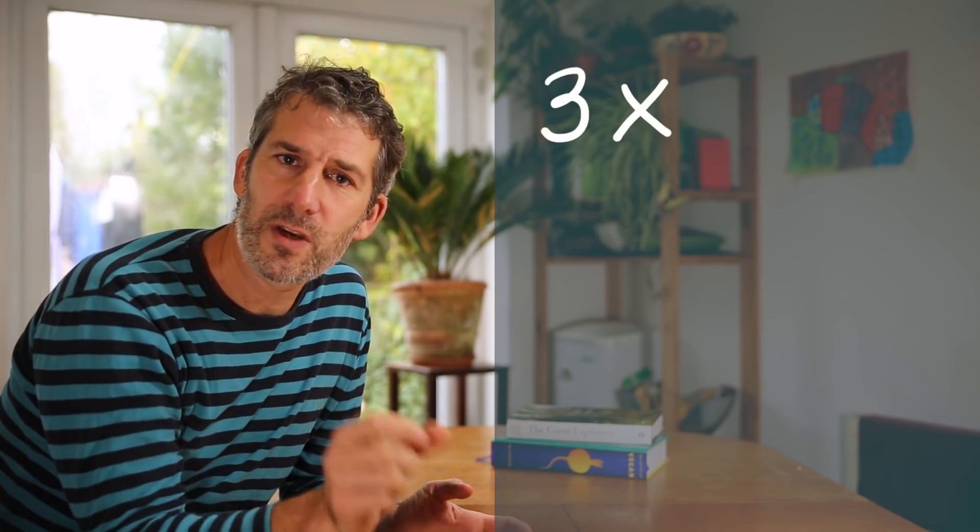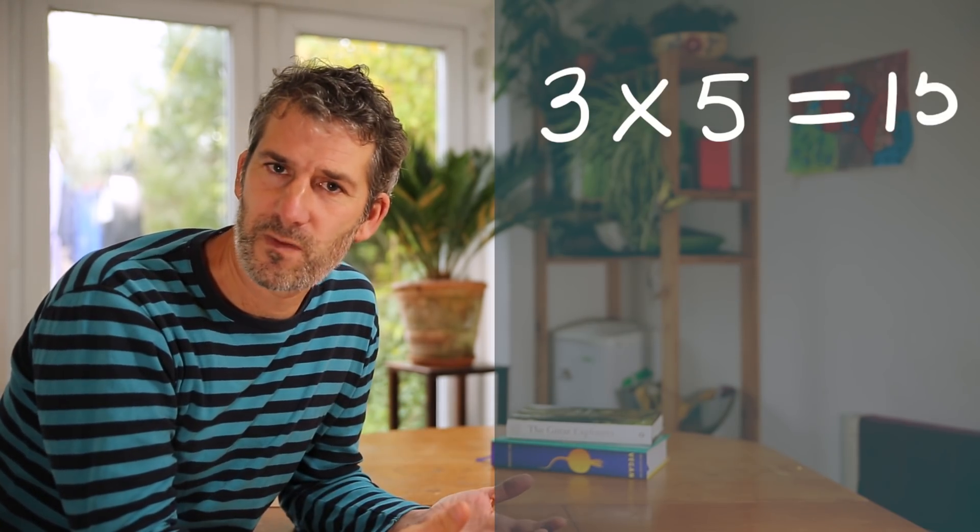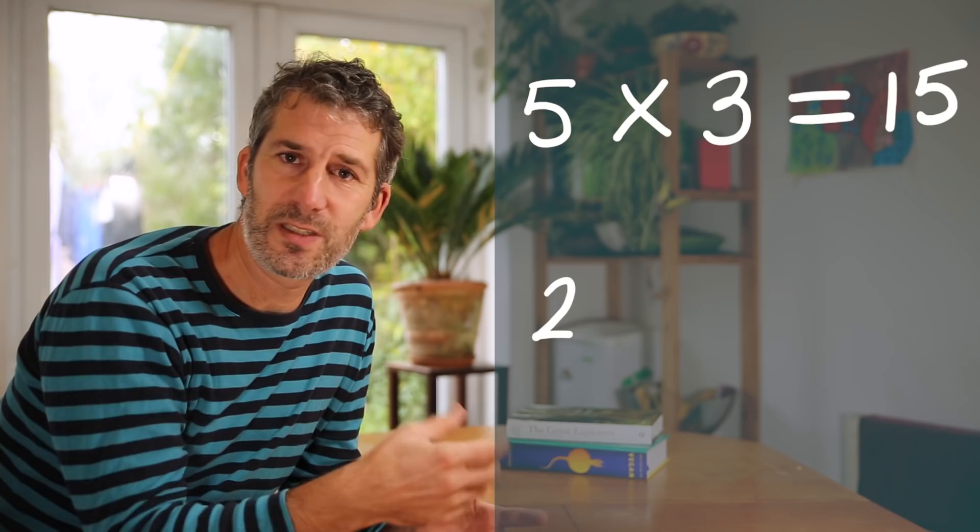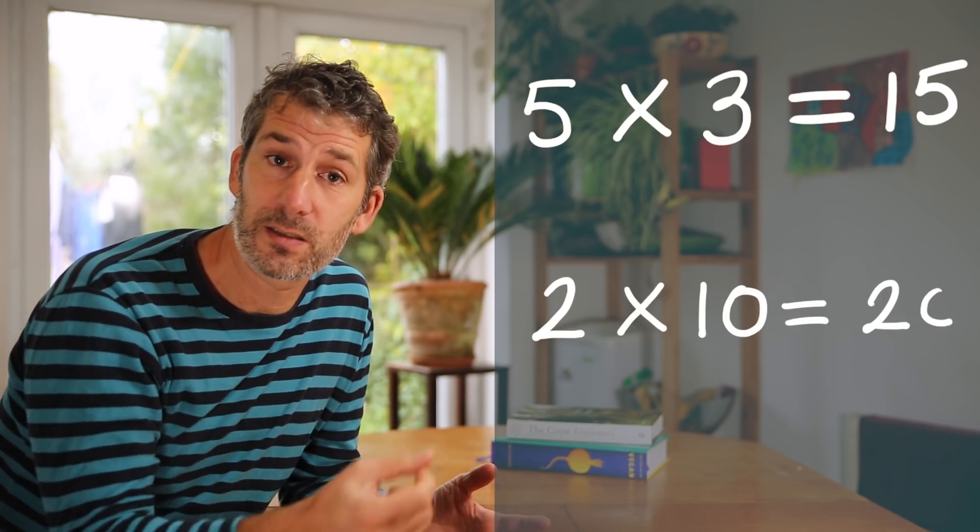Incidentally another useful thing is to remember that when you are multiplying things together, the order that you do it in doesn't matter. 3 times 5 is the same as 5 times 3. 2 times 10 is the same as 10 times 2.